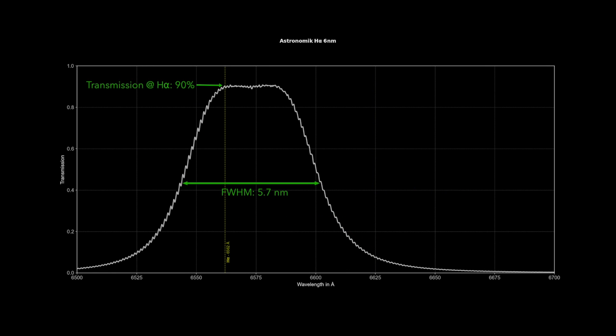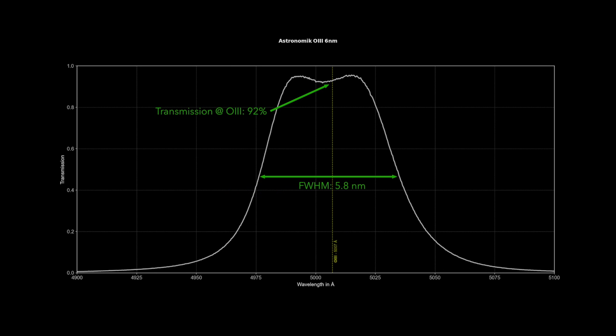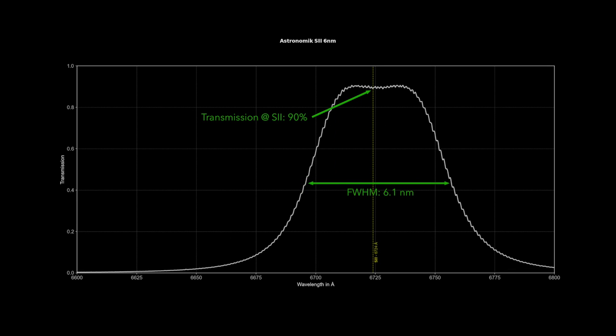Next up are Astronomic's narrowband filters. I won't say a whole lot about these because they pretty much matched the specs published by Astronomic, in terms of their bandwidth and transmission numbers. In general, I get the sense that Astronomic is a pretty reliable company, based on the small set of samples I've measured.